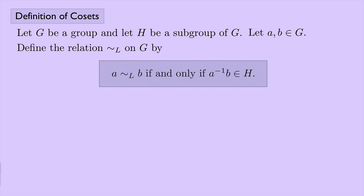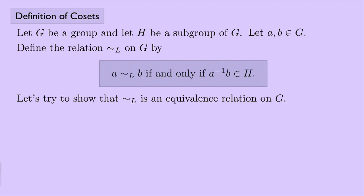Take a minute to absorb this and see if you can understand what it's saying. This is a relation. It's not yet an equivalence relation, but maybe we can try and show that it's an equivalence relation. And if you remember, there are three things that we need to show if we want to show that something is an equivalence relation. They're easy to remember — they're alphabetical: R-S-T. Reflexive, symmetric, transitive. Let's take a look at these and see if we can figure out how we might go ahead and prove this.